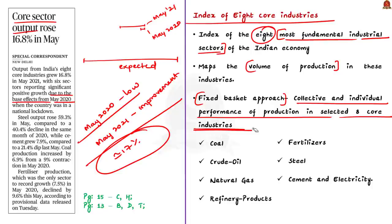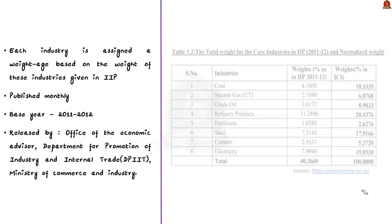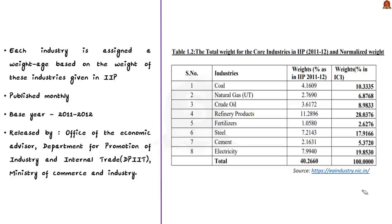The eight core industries are: coal, crude oil, natural gas, refinery products, fertilizers, steel, cement, and electricity. The highest weightage within the index of eight core industries goes to refinery products and the lowest weightage goes to fertilizers. Each industry is assigned a weightage based on its weight in the Index of Industrial Production.